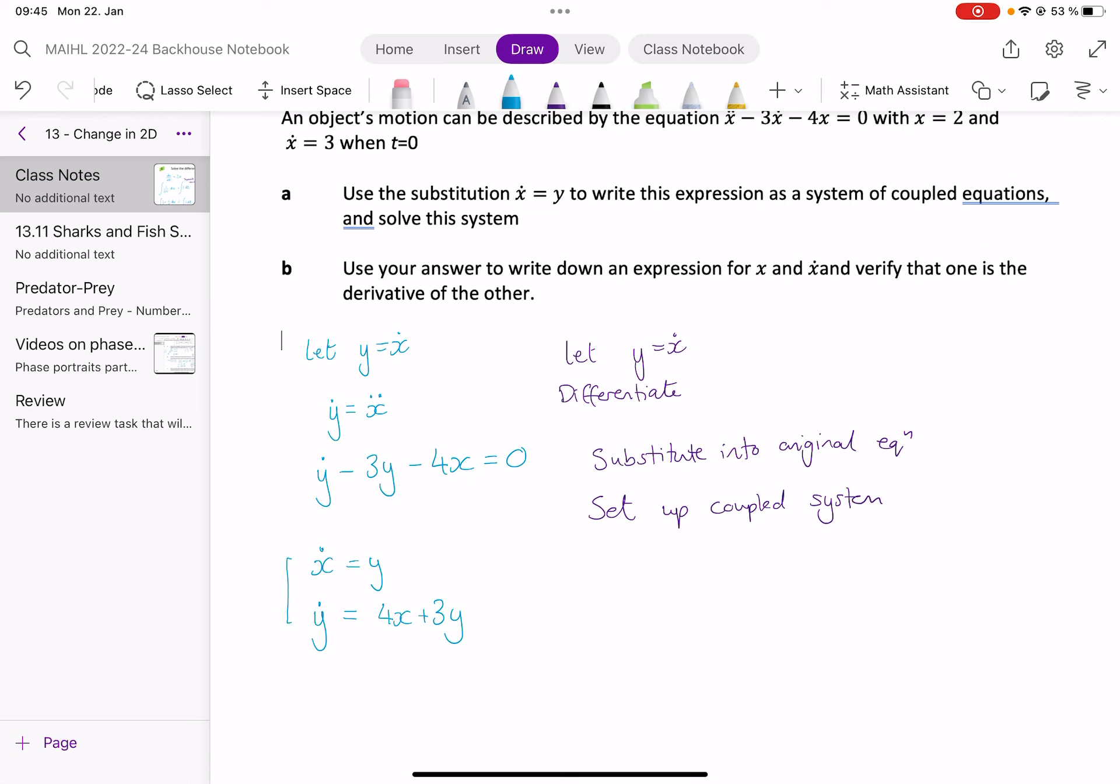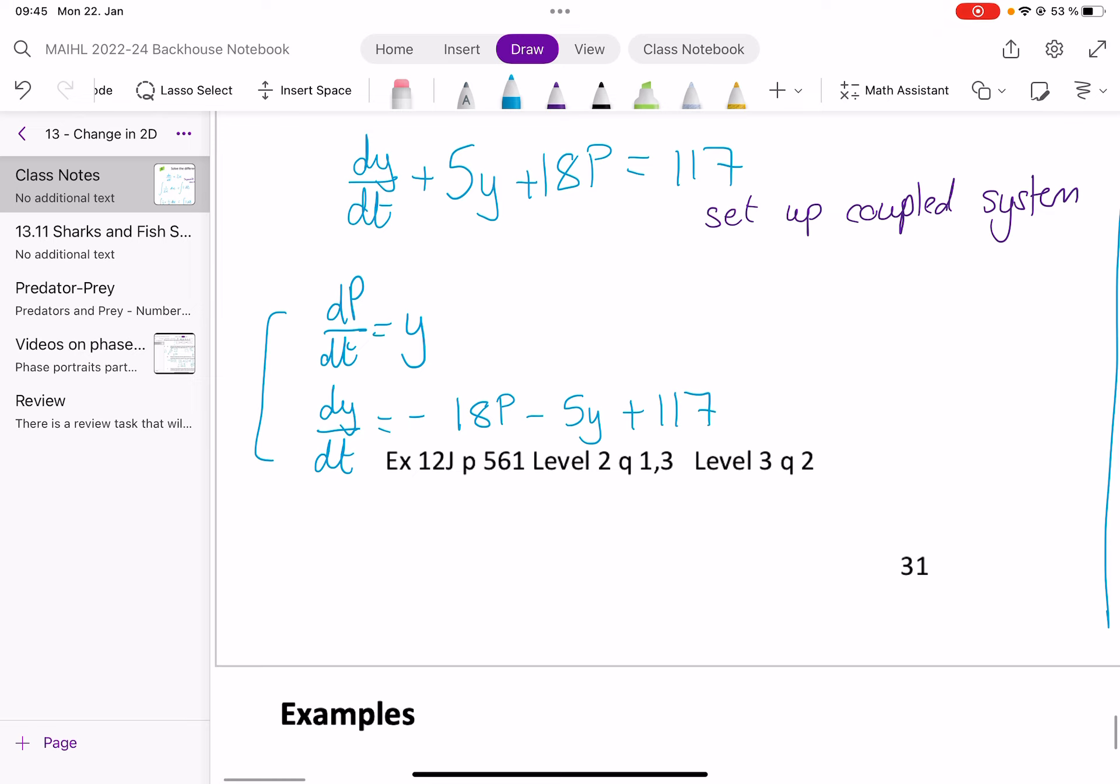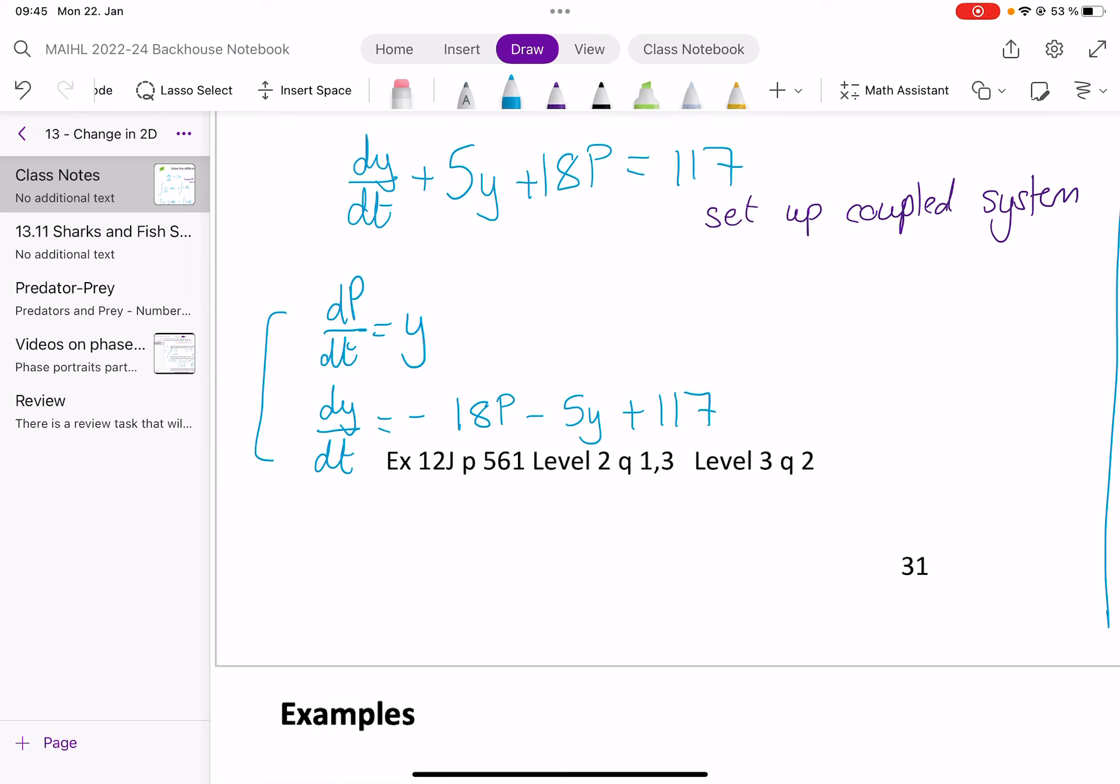Okay, so now we've got to the point where we've got a coupled system. At this point, you could use the matrix approach that we've been using to solve this. If the question asks us to use Euler's method, we could also use Euler's method. The example before, the coupled system we had didn't allow us to use the matrix method. So we had to use Euler's method.